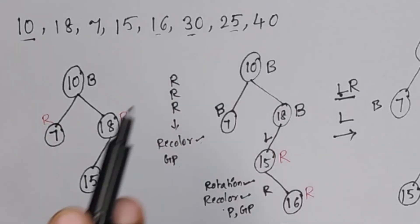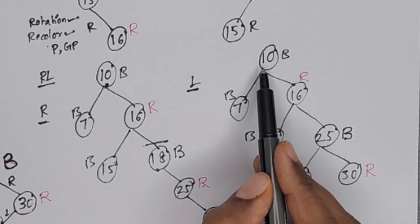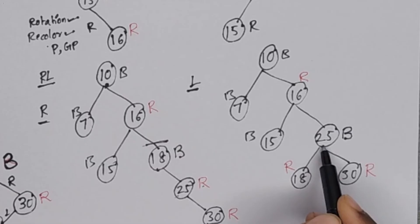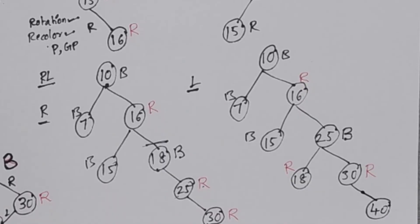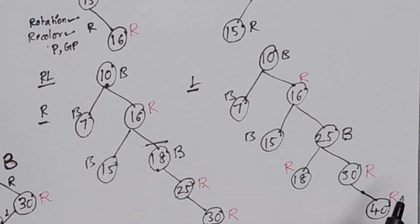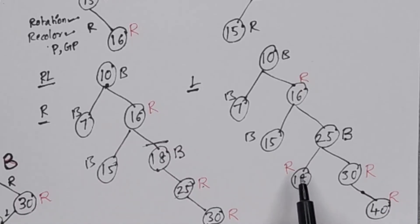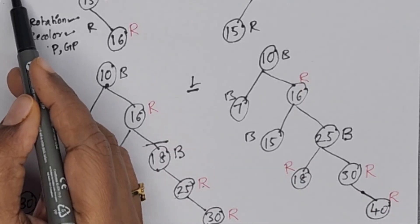The next element is 40. Since 40 is greater than 10, 16, 25, and 30, we insert 40 on the right of 30, colored red. Again there is a red-red conflict. We check the sibling: the sibling is also red, so we recolor.